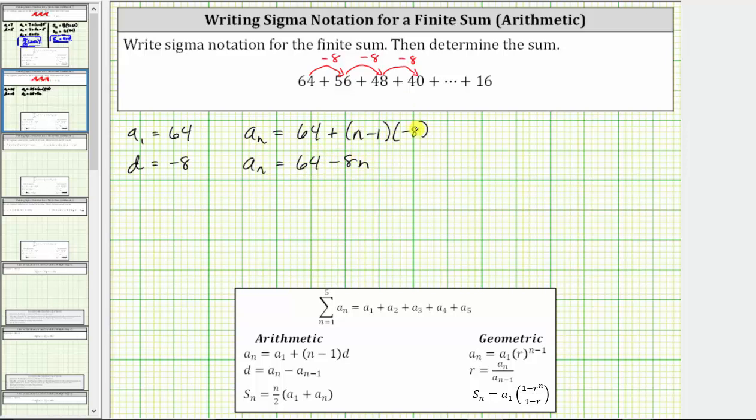And then we have plus negative 8 times negative 1, which is positive 8, giving us plus 8. 64 plus 8 equals 72. A sub n equals 72 minus 8n.